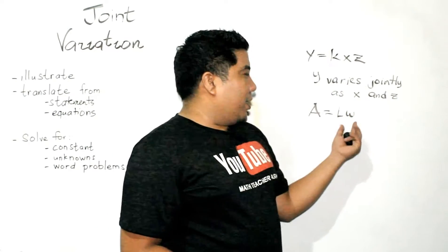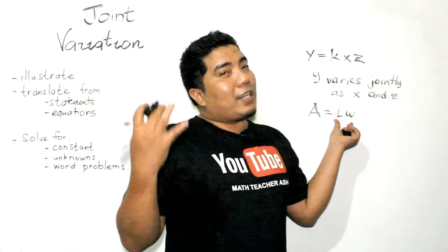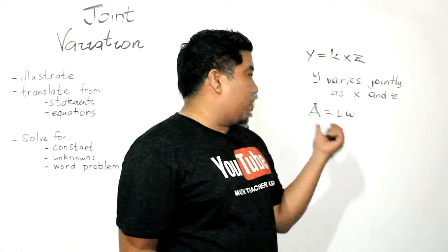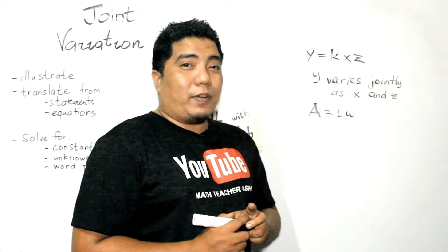Length times width, two variables affecting the area. So, basically, as your length increases or as your width increases, your area also increases. And this is a great example of a joint variation.